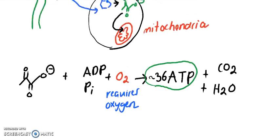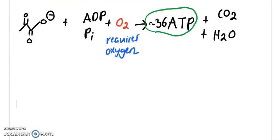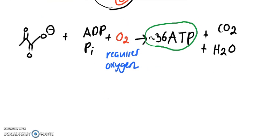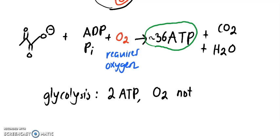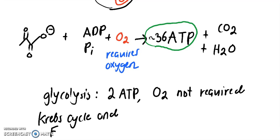So to do a recap of glycolysis and the rest of respiration: glycolysis, we made only 2 ATP and oxygen was not required. For the Krebs cycle and the electron transport chain, this generates us much more ATP, approximately 36, around that range, and oxygen is required.